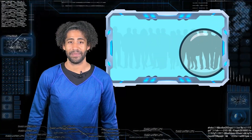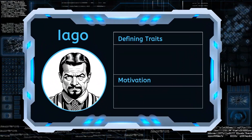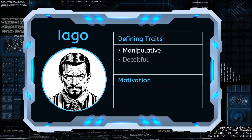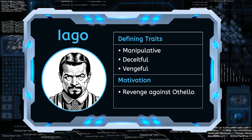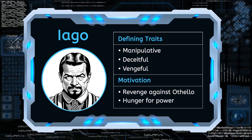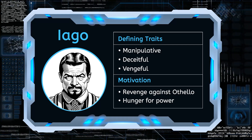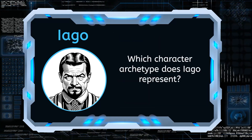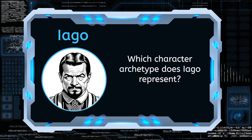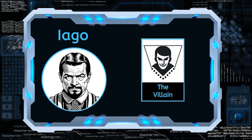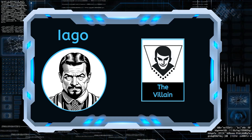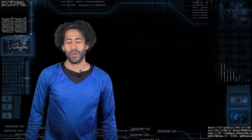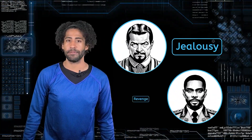Now loading Iago file. Iago is introduced as a manipulative, deceitful, and vengeful character. His motivations are driven by a desire for revenge against Othello and a hunger for power. He reveals his plan to use Othello's trust to manipulate and ultimately destroy him. So, which character archetype does Iago represent? The villain. Iago's scheming and vindictive nature is evident as he cunningly sets the stage for the conflicts to come. What do you think this conflict between Iago and Othello tells us about the themes of jealousy and revenge in the play?